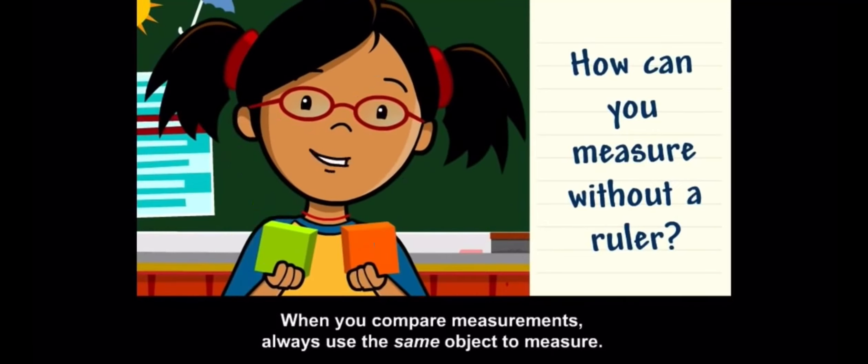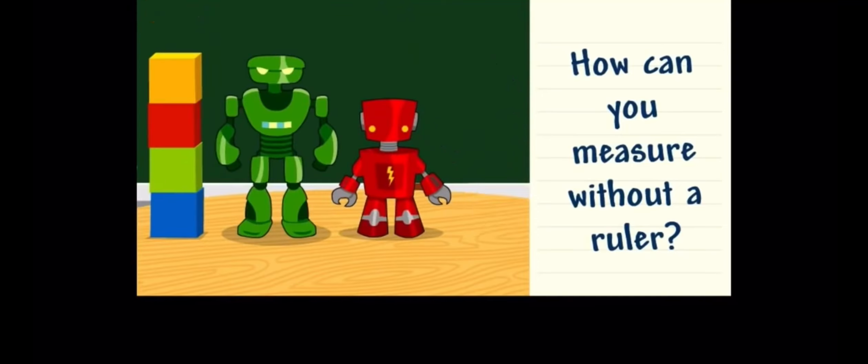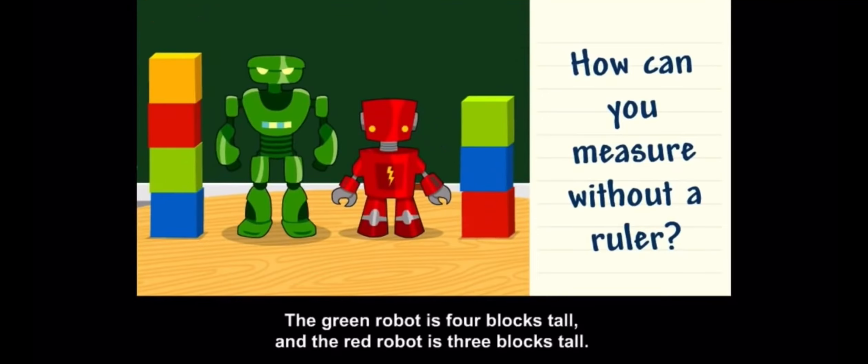When you compare measurements, always use the same object to measure. The green robot is four blocks tall, and the red robot is three blocks tall.